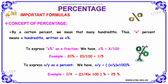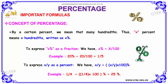Consider the example over here. I have a fraction 1 by 4. To express it as a percentage, I am going to multiply it by hundred and I get 25%. So, 1 by 4 is nothing but 25%.